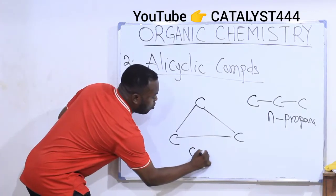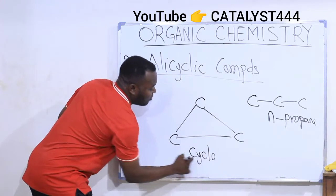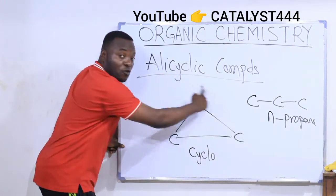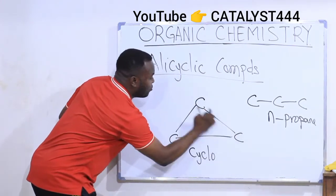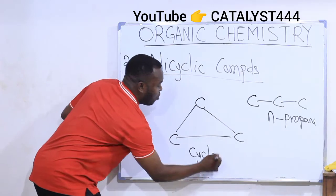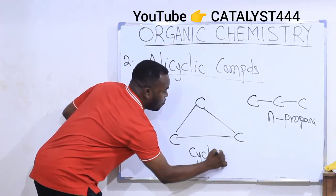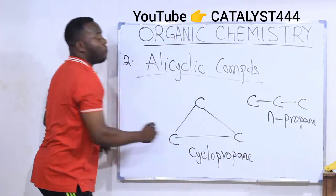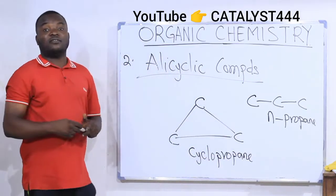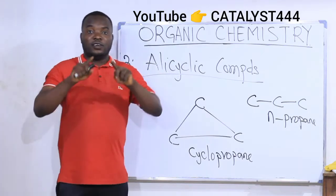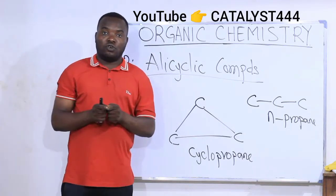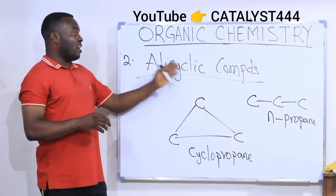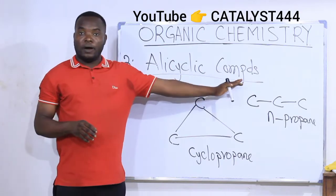But the closed ring form is not called normal propane because it is in the cyclic form. We call it cyclo — meaning it is in cyclic form — and since it has three carbons, we call it cyclopropane. So those organic compounds that have the cyclic structure are called alicyclic compounds.